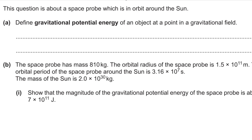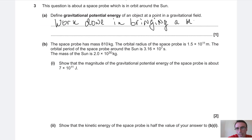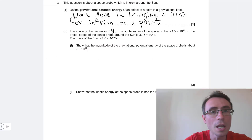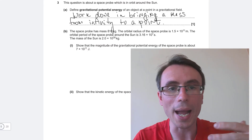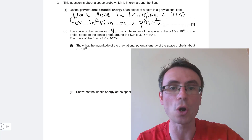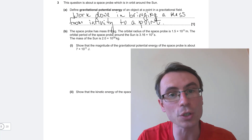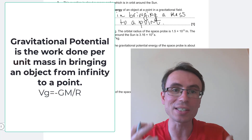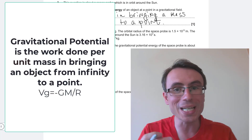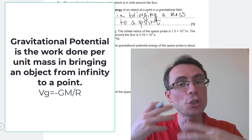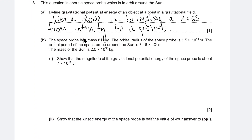Gravitational potential energy is defined as the work done in bringing a mass from infinity to a point. Remember that if you're asked to define the gravitational potential, then this is the work done in bringing a unit mass.